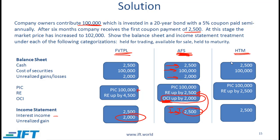Turning to non-current liabilities: all liabilities not classified as current are non-current. Under long-term financial liabilities we can have loans, notes, and bonds payable. We can also have deferred tax liabilities, which result from temporary timing differences between a company's income as reported for tax purposes and income reported for financial statement purposes. There is a full reading on income taxes and long-term liabilities which will be covered later.